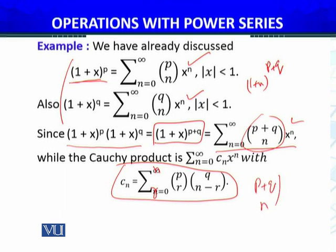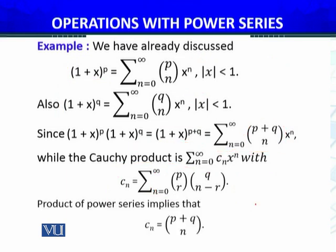The product of power series implies that c_n equals (p+q) choose n from this one. I'm writing it here, okay.